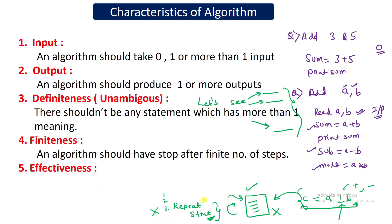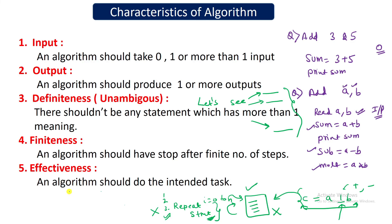Your algorithm should specify something like 'for i equal to zero to n, repeat this step n number of times,' so that it stops after n steps. The last property is effectiveness — your algorithm should do the intended task. If the question asks you to search a number in an array, the output should tell whether the number is present or not, or give its index. Whatever the problem statement asks, your algorithm must perform that particular intended task.